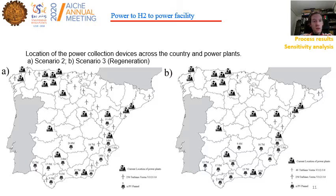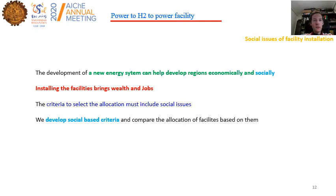The second scenario we are considering here, together with the regeneration, incorporates the second and third scenarios from the previous slide, where the efficiency and cost of the different units improve over time. As a result, we no longer need as many turbines and PV panels, and we of course also reduce the cost of the system.